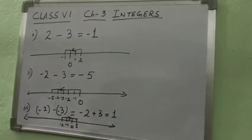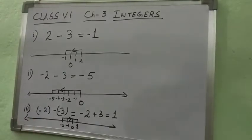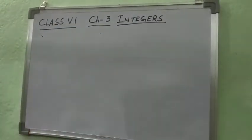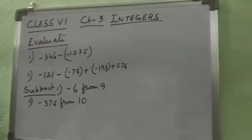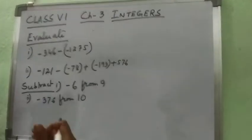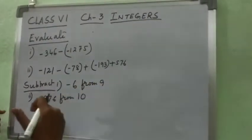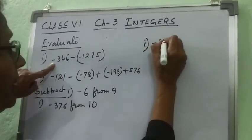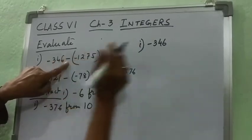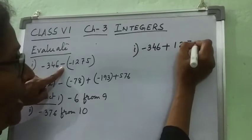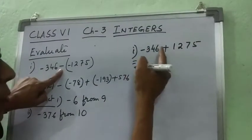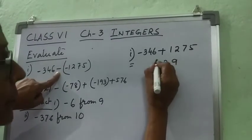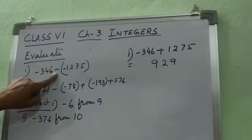Now I shall discuss addition and subtraction of more than 3 integers and how to solve them. I am writing a few sums. Taking some positive and negative integers — now the first question: minus 346 minus, within the bracket a negative integer, so minus minus becomes plus 1,275. The plus value is greater, so the sign will be plus, and after subtracting the answer will come 929.